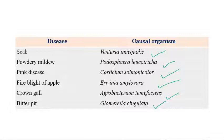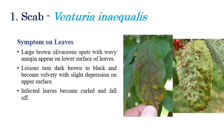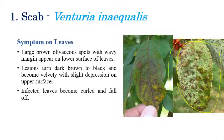We will now discuss each disease in detail. The first disease is apple scab, which is caused by Venturia inaequalis. Symptoms can be seen on both surfaces of the leaves — the upper surface as well as the lower surface.